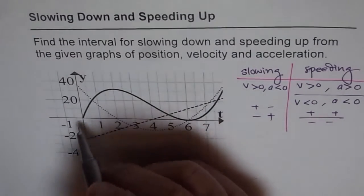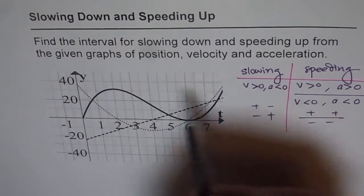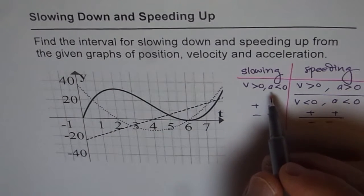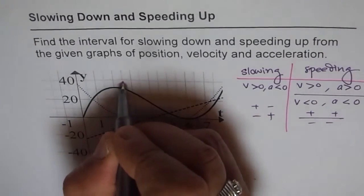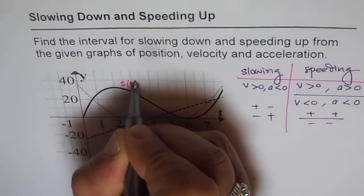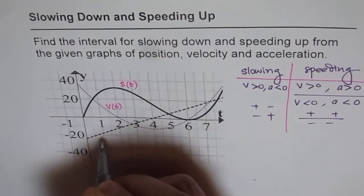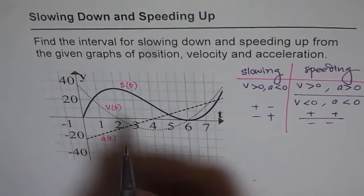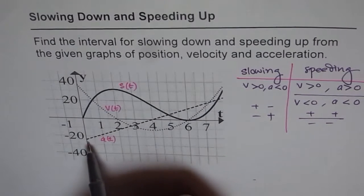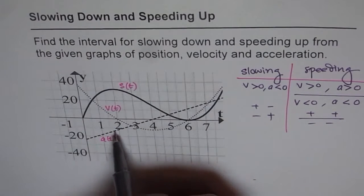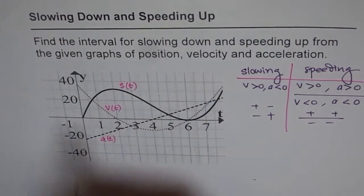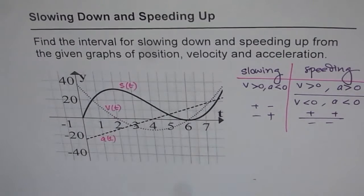In this graph, we analyzed that displacement, velocity, and acceleration are shown. This one is displacement, this one is velocity, and this one is acceleration. This is a linear function — degree one, degree two, and more than two. When we take the derivative, we get one less degree.